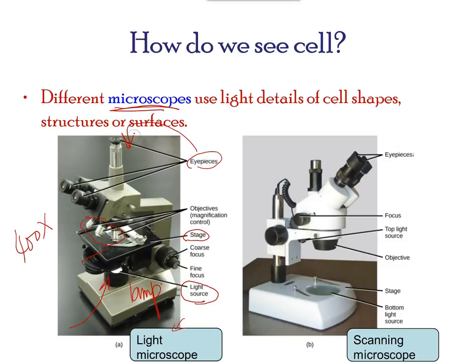The specimen is required to be very thin to allow the light source to pass through it. Structures within cells are usually colorless, so different stains are used to distinguish the structures.